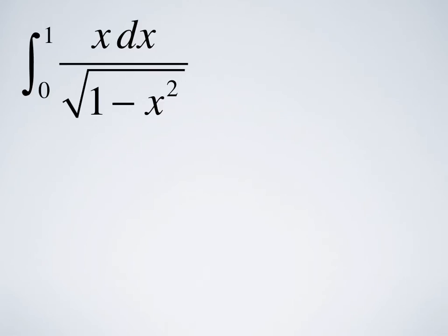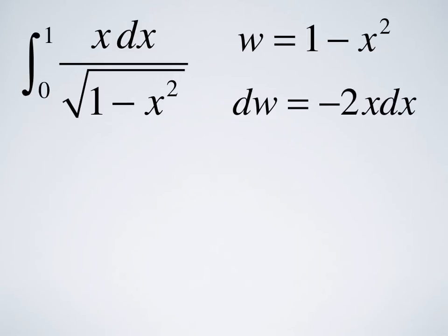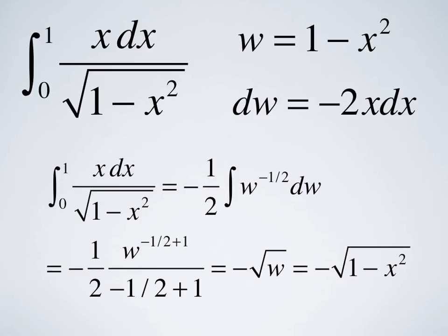To do this last integral, we're going to use substitution again, and we'll use the variable w as we did in the first example. We'll take w equals 1 minus x squared, so dw is minus 2x dx. So the integral from 0 to 1 of x dx over the square root of 1 minus x squared equals minus 1 half integral of w to the minus 1 half dw, and that equals minus the square root of w, which equals minus the square root of 1 minus x squared.